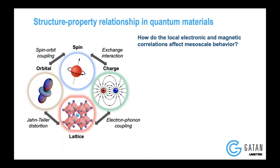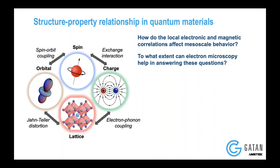In electron microscopy, what we really care about is how do the local electronic and magnetic correlations affect these mesoscale effects, like superconductivity, different kinds of spin-to-charge conversion efficiencies, or various topological structures. How do the local magnetic and electronic effects actually contribute to that mesoscale effect? The second thing is, to what extent can electron microscopy actually help in answering these questions, because electron microscopy can measure only a finite number of things.